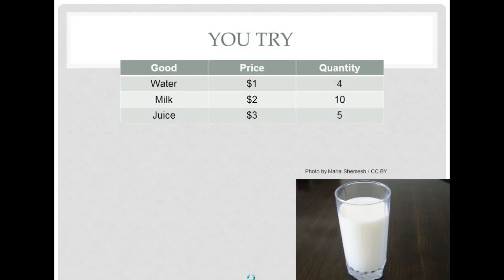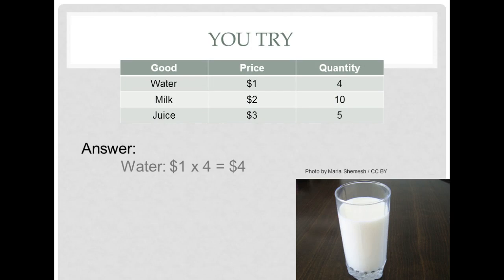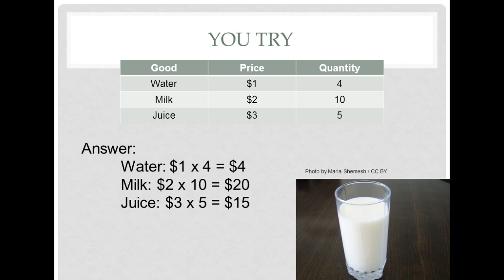Now try to find the value of the basket if three items — water, milk, and juice — were the only items produced. Using the same method: water is $1 × 4 = $4; milk is $2 × 10 = $20; juice is $3 × 5 = $15. The total value of the basket is $4 + $20 + $15 = $39. That's how we calculate the value of a basket — a straightforward first calculation.